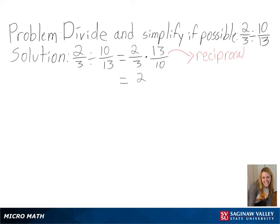We then can put this into simpler terms by writing 10 as 2 times 5. So then we have 2 times 13 over 3 times 2 times 5.